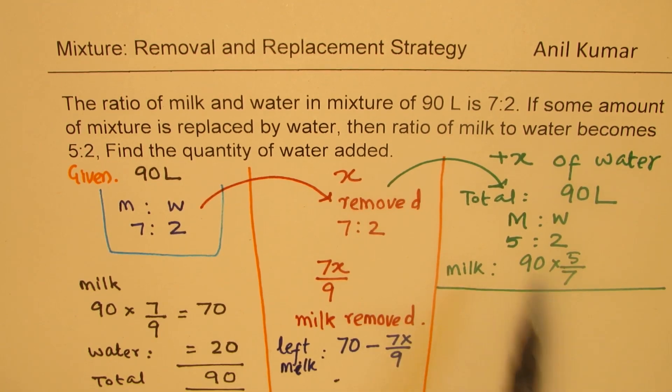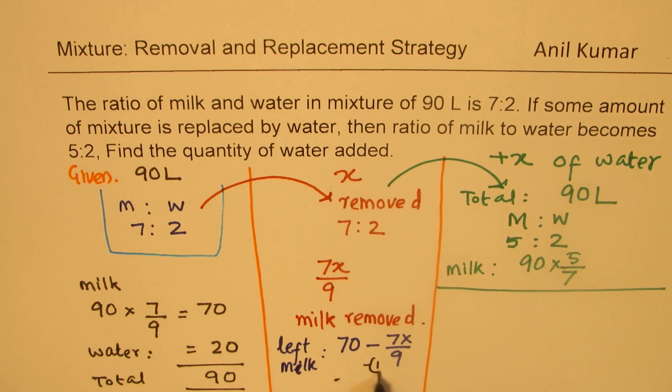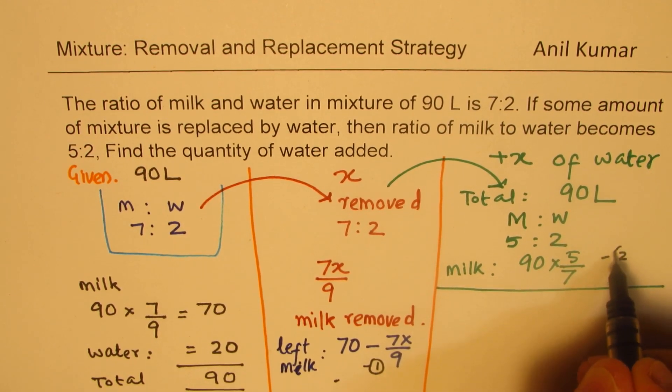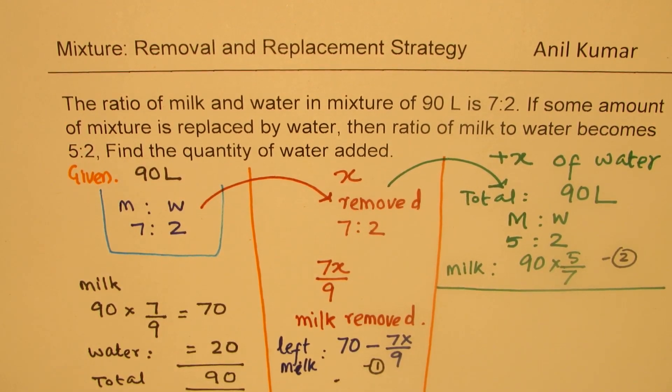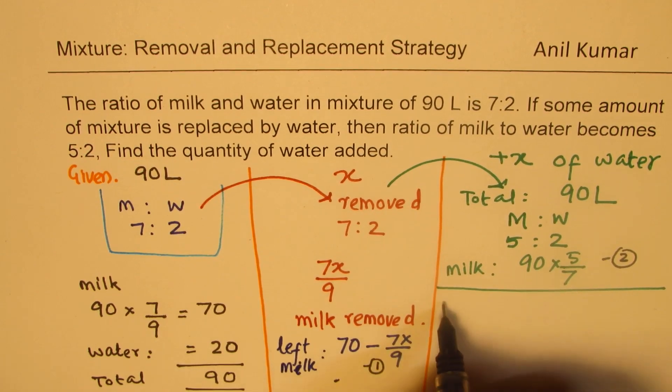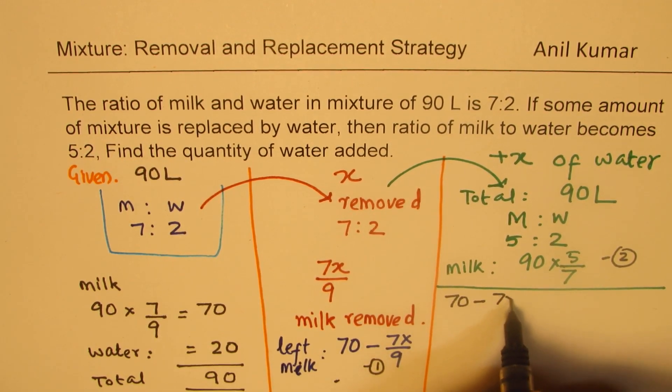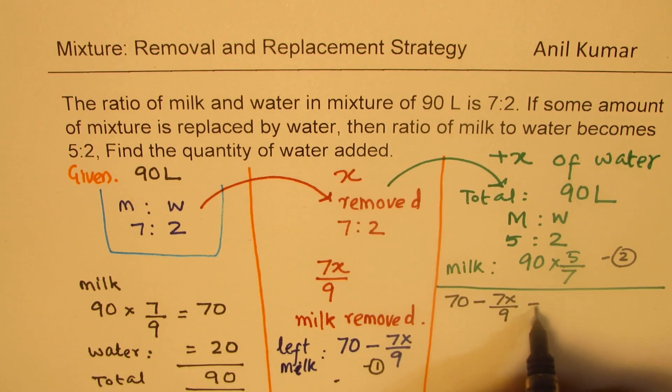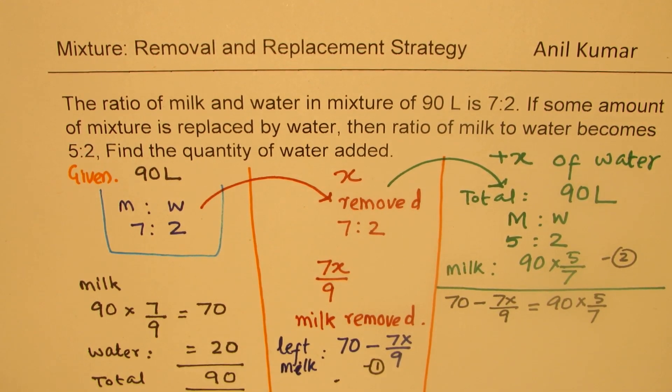So we get our equation which is 70 minus 7x over 9 should be equal to 90 times 5 over 7. So from here, we can find the value of x, the quantity which was originally removed, and then that quantity of water was being added.